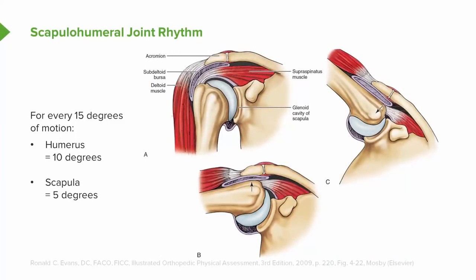For shoulder joint motion, there is an association between the humerus and the scapula. For every 10 degrees of humerus abduction, there needs to be 5 degrees of scapula abduction. Anatomically, you cannot abduct the humerus without motion of the scapula, because otherwise it would compress the muscles and neurovascular structures in the superhumeral space.